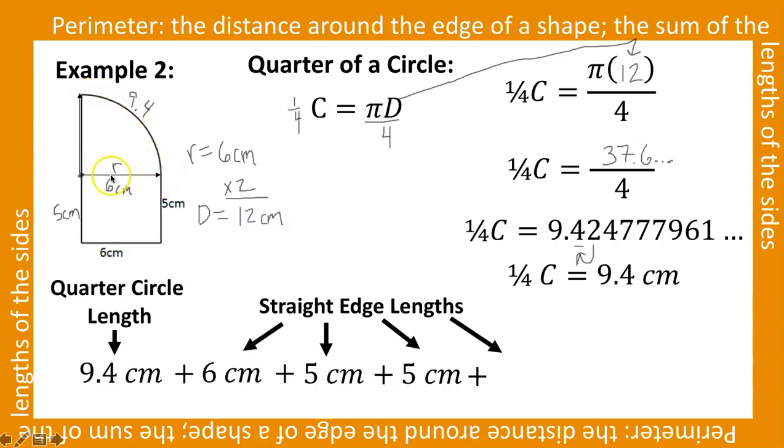Because this piece right here is also the radius of the circle, because it goes from the center of the circle to the edge. So I can go ahead and label that as well with the 6 centimeter length.